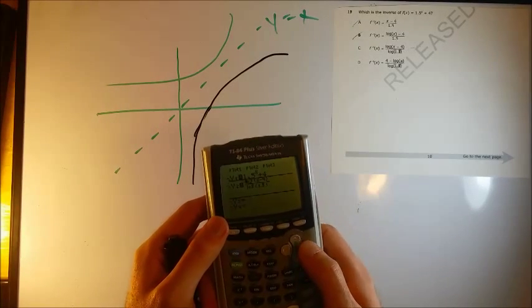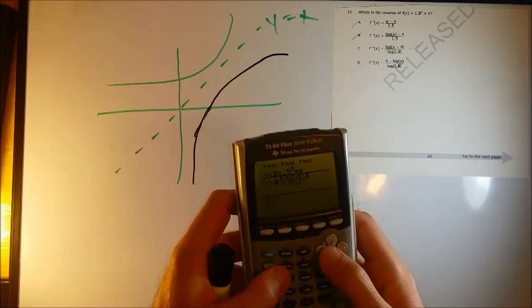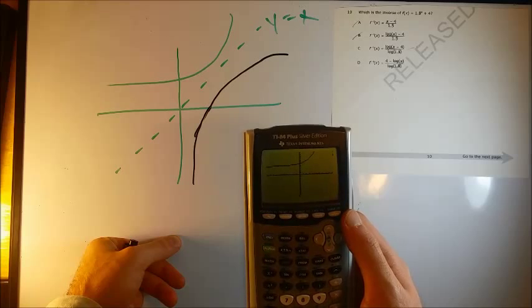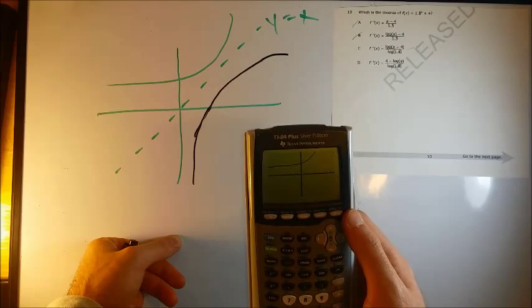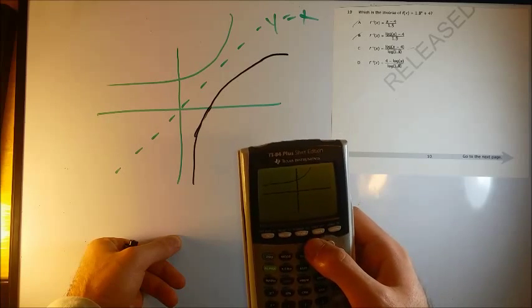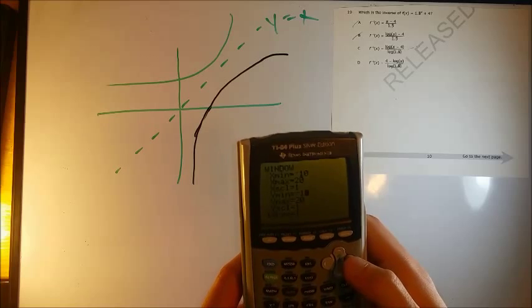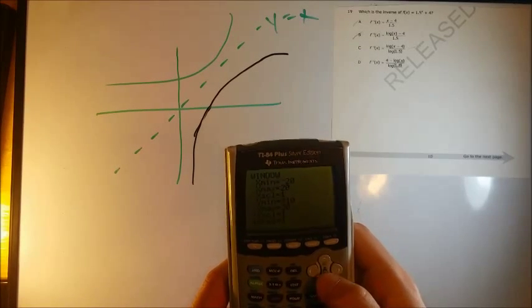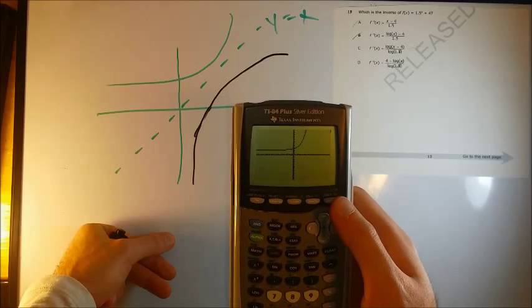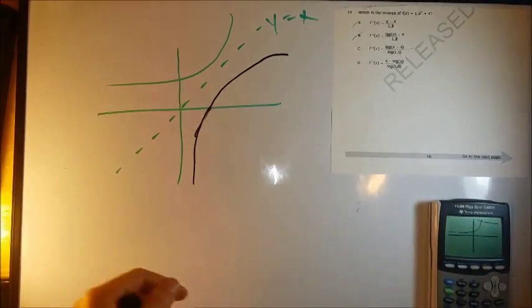So I'm just going to dot this just to say I feel pretty good about it. But let's just try out D to see just to feel completely confident. Let's see, 4 minus log of x over log of 1.5. If we graph this, we don't even see showing up. I can zoom out a little bit. I'll make my window a little bigger. We see that's definitely not a reflection across the y equals x line. So answer choice is definitely going to be C here.